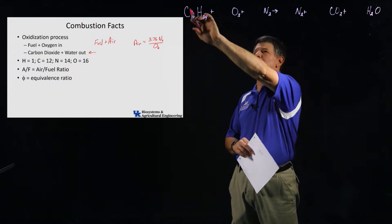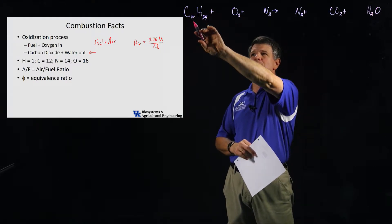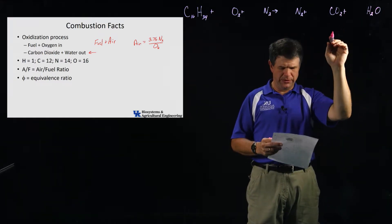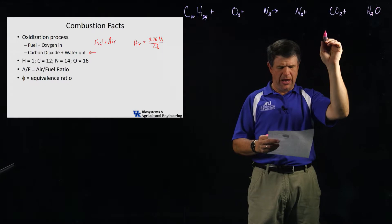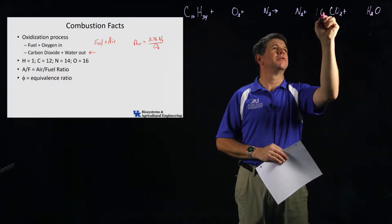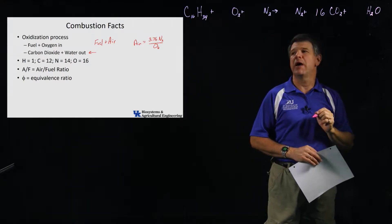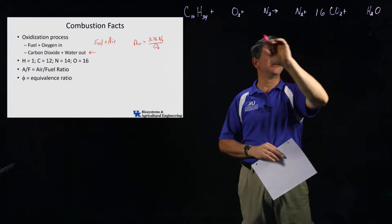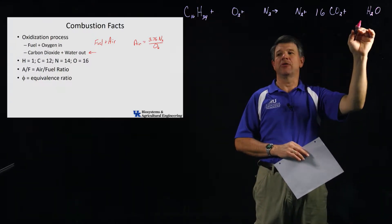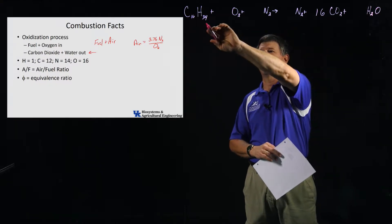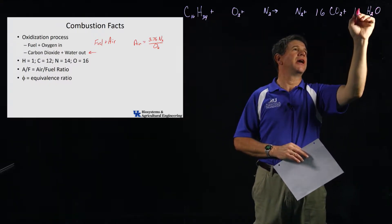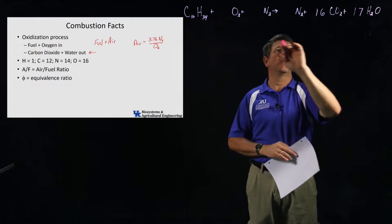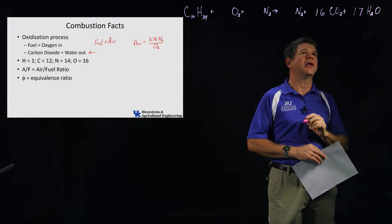Let's balance this equation. On the left we have diesel fuel with 16 carbon atoms. On the right, carbon only appears in CO2, so I need 16 molecules of CO2 to balance the carbon. For hydrogen: there are 34 hydrogens on the left, all going into water — H2O — so I need 17 water molecules to account for those 34 hydrogens. That balances the carbon and hydrogen.